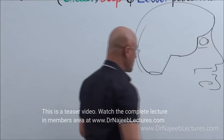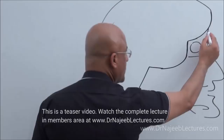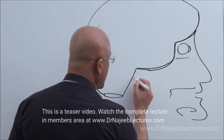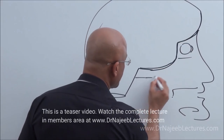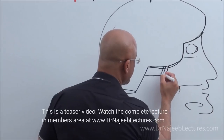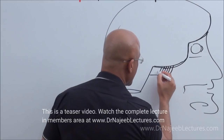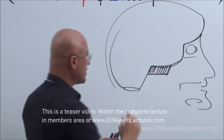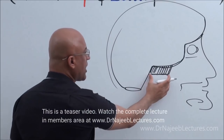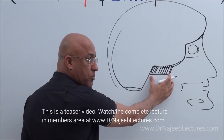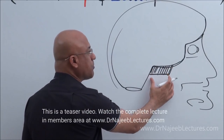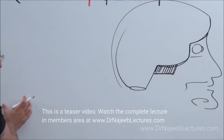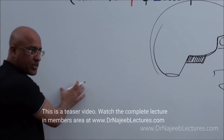In the middle cranial fossa, this part of the bone — this is the petrous part of the temporal bone. I've made a very simple diagram, and now I'm going to draw a magnification of it.